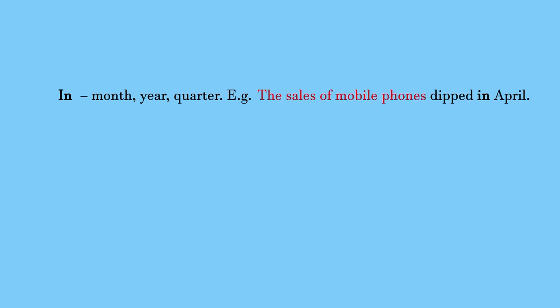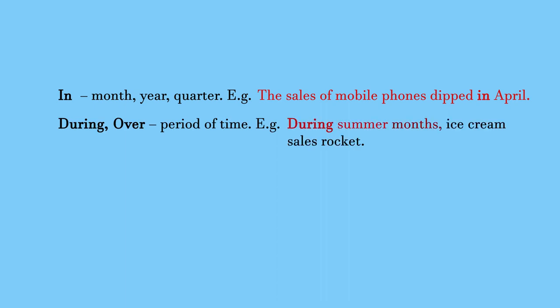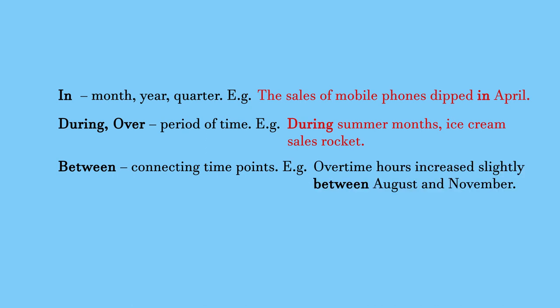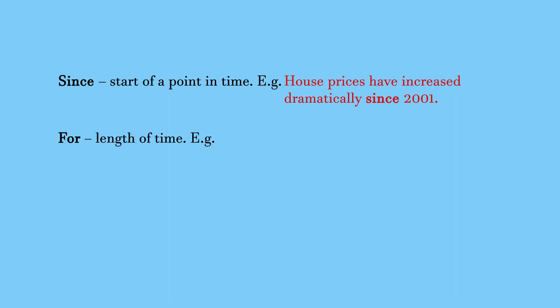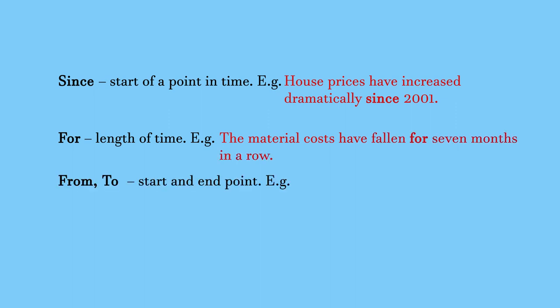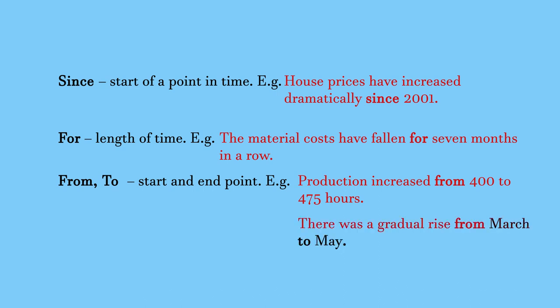The sales of mobile phones dipped in April. During summer months, ice cream sales rocket. Overtime hours increased slightly between August and November. House prices have increased dramatically since 2001. The material costs have fallen for seven months in a row. Production increased from 400 to 475 hours. There was a gradual rise from March to May.